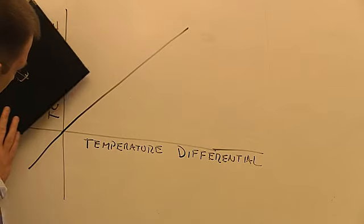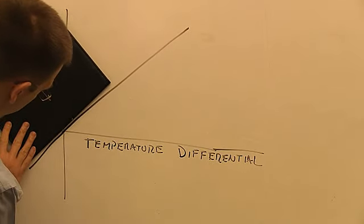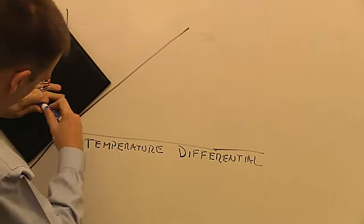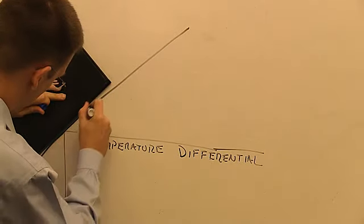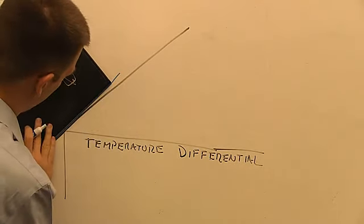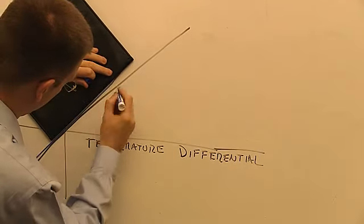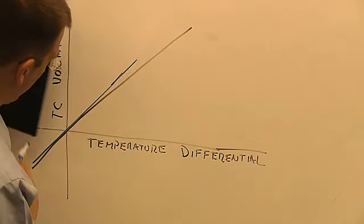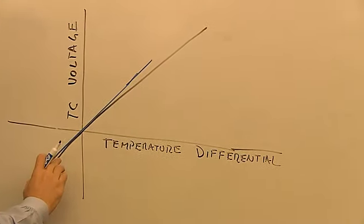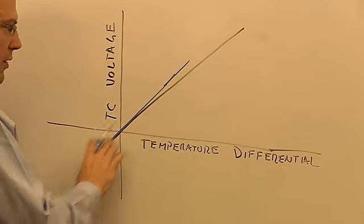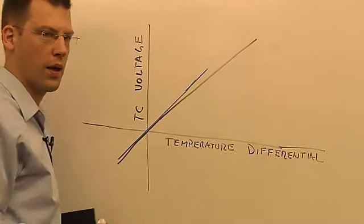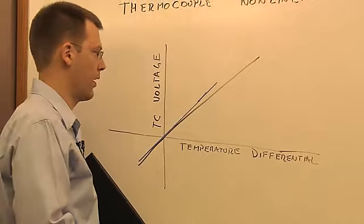But if you were to actually plot a straight line against that, and if it was actually straight here, what you might see is that your thermocouple line actually bends a little bit. So the thermocouple has some non-linearity.